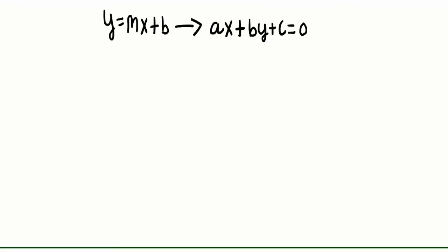In this part of the video, we are going to be converting Y equals MX plus B, so slope-intercept form, to AX plus BY plus C equals 0, which is standard form. Let's write an equation in Y equals MX plus B, something like Y equals 2X plus 5. To convert this equation to standard form, all we have to do is bring our Y to the right side so we can have all our terms on one side and our 0 on the other side.